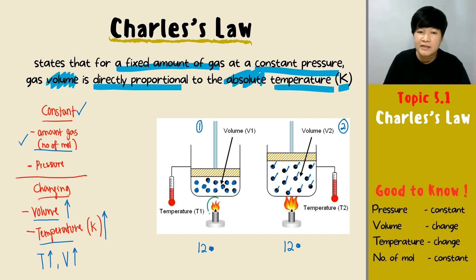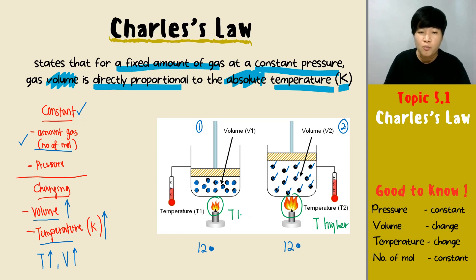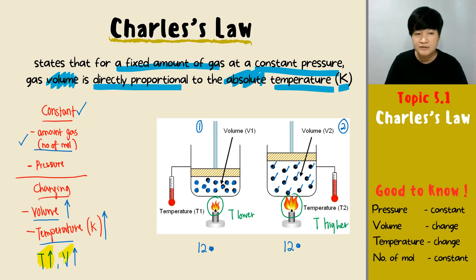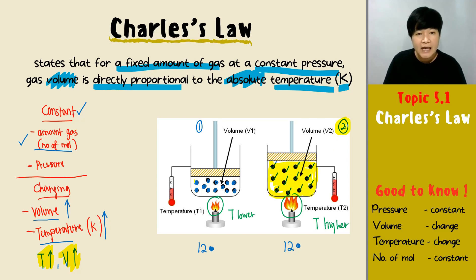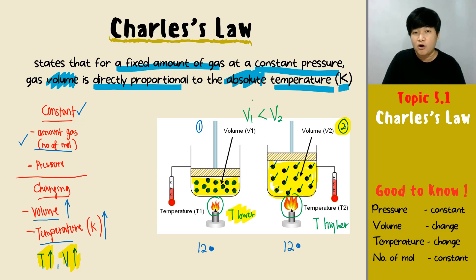The thing that is changing is the fire. Look at the fire — when the fire is larger, the temperature is higher in the second condition, while the temperature is lower in the first condition. As we agreed, when the temperature increases, the volume shall increase. Look at the volume of the container — the volume is much bigger in the second condition than the first one. The volume in the first condition is smaller because the temperature is lower. So you can see that V1 is smaller than V2, because T1 is smaller than T2.